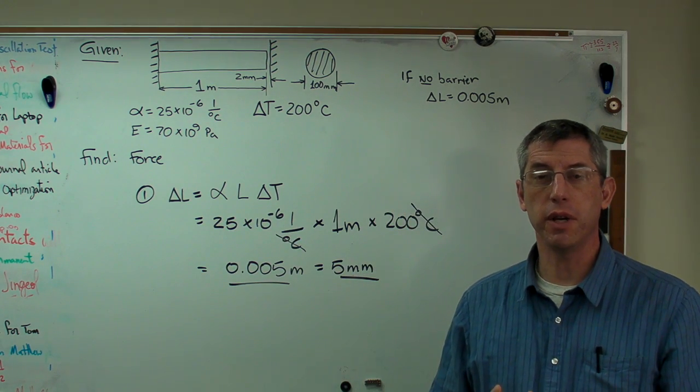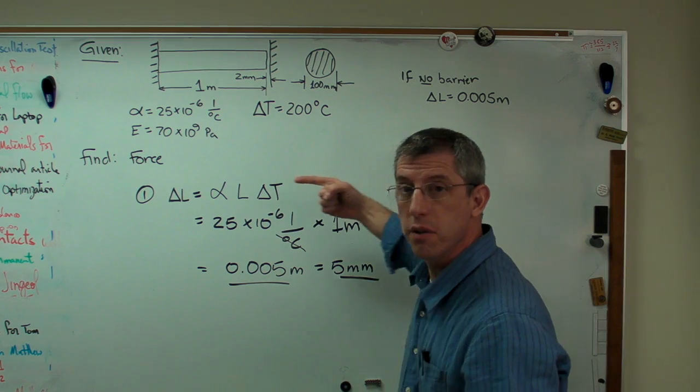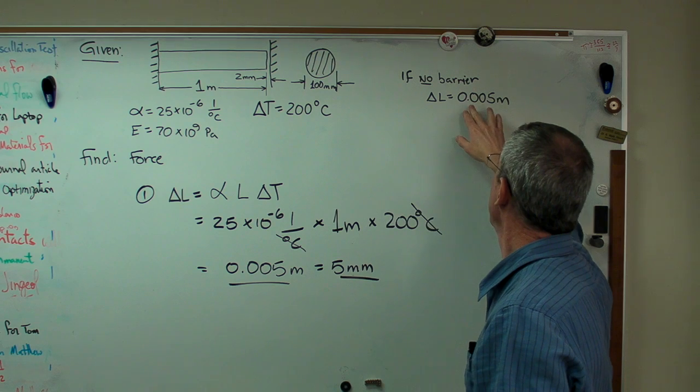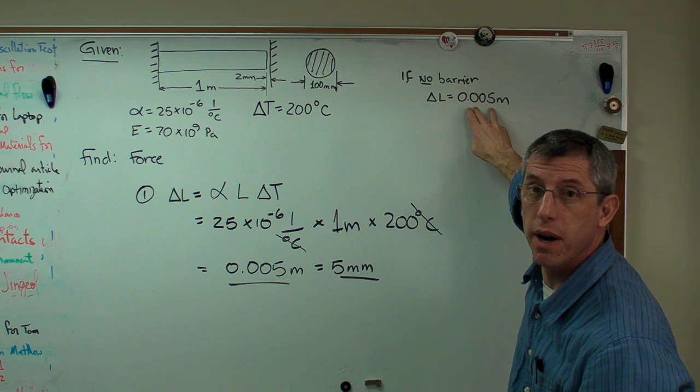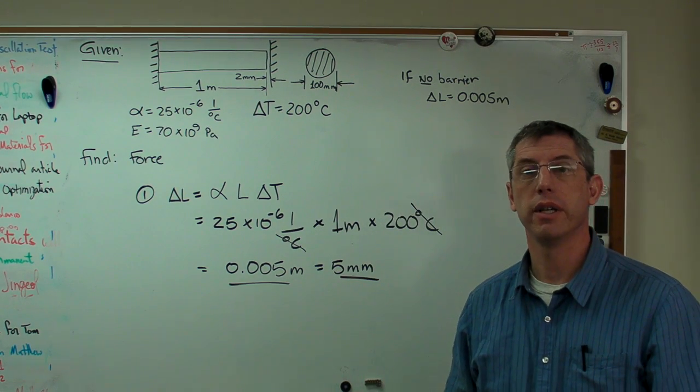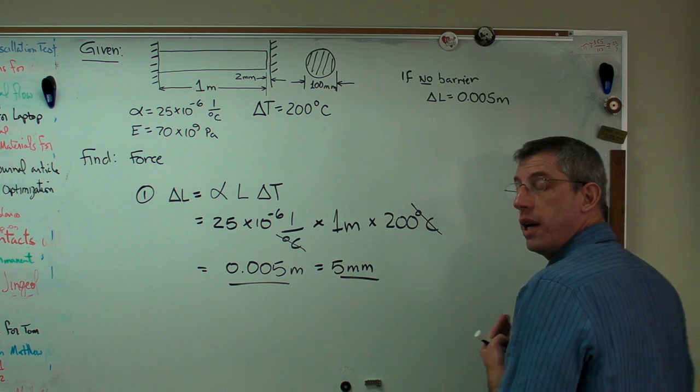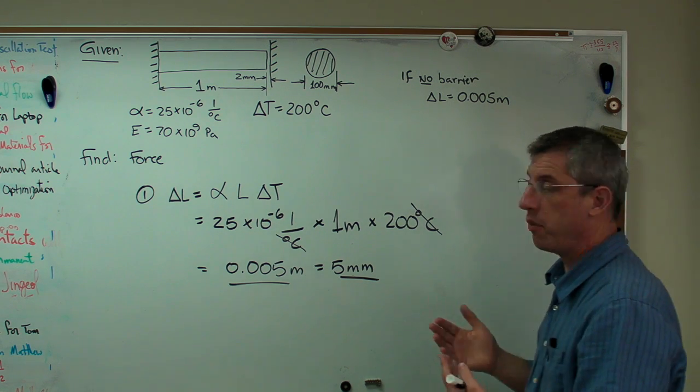Next thing we're going to do is figure out how much force it takes to push the free end of the bar back that direction. Now, it's going to want to expand 5 millimeters. We're going to let it expand 2 millimeters. So what we need now is the force required to push the free end of that bar back by 3 millimeters.